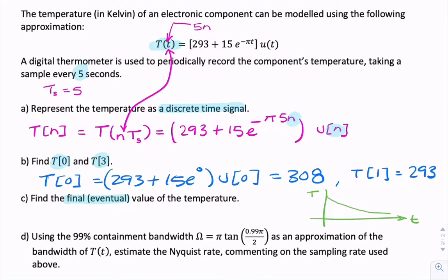And then you have these samples just separated by 5 seconds. So that's 5, 10, 15. So we've already found T of 0, the first sample, and T of 3. That's 1, 2, 3. We found that. Now they want the final temperature. What they want is T of n.